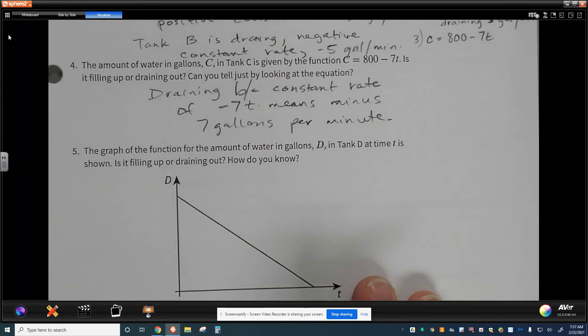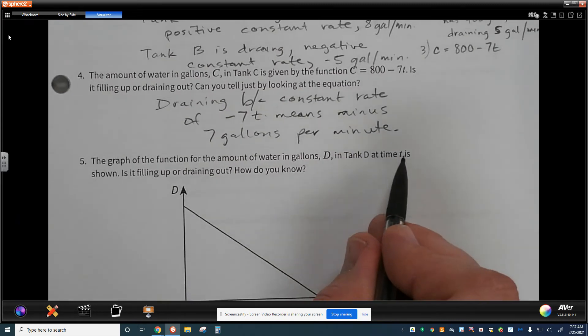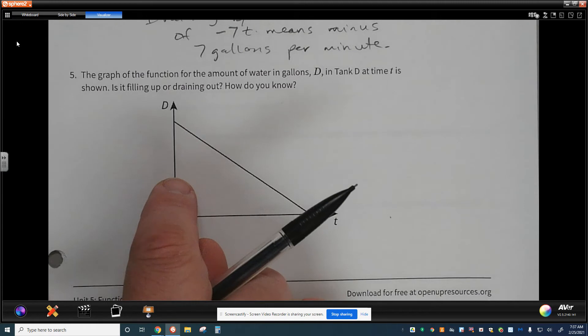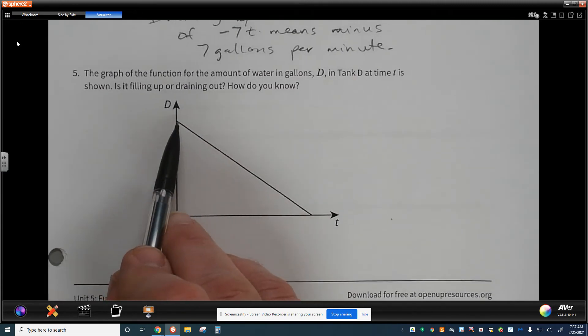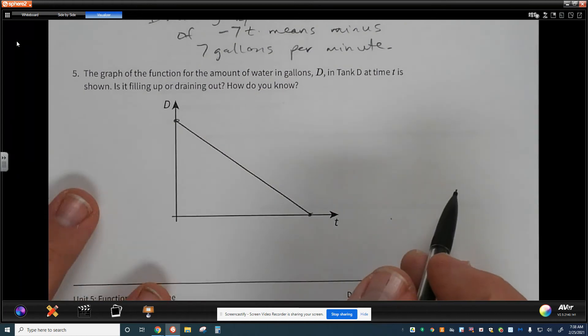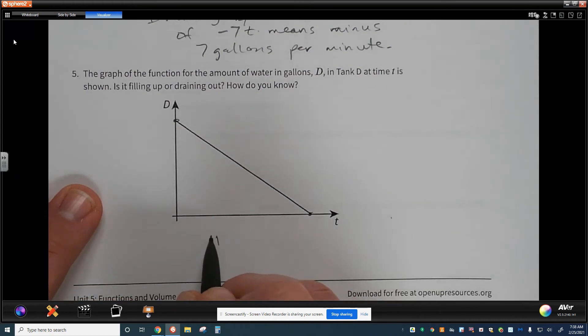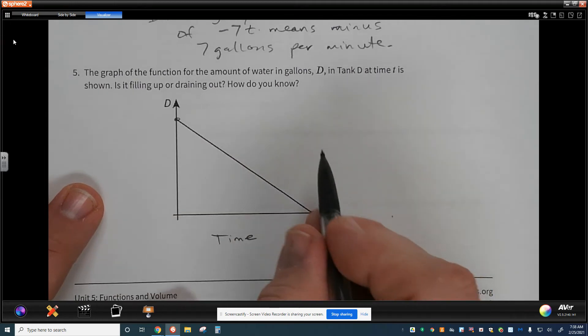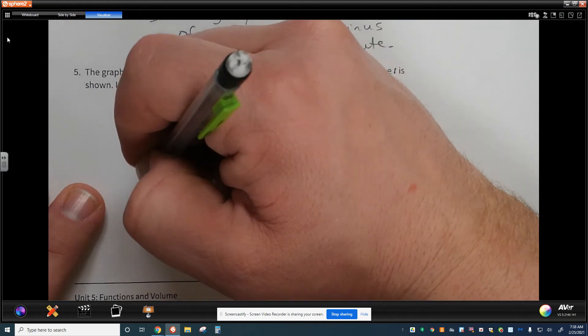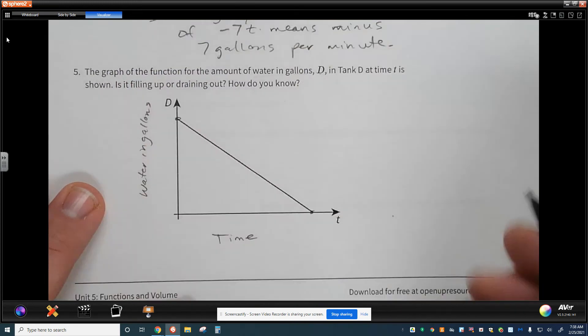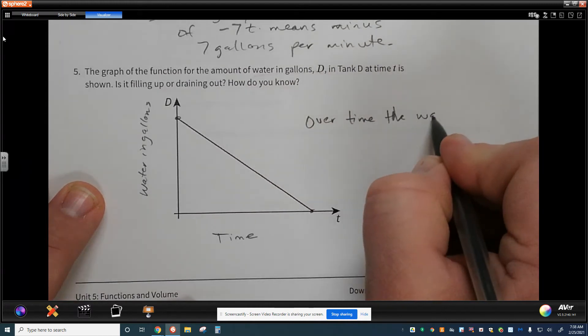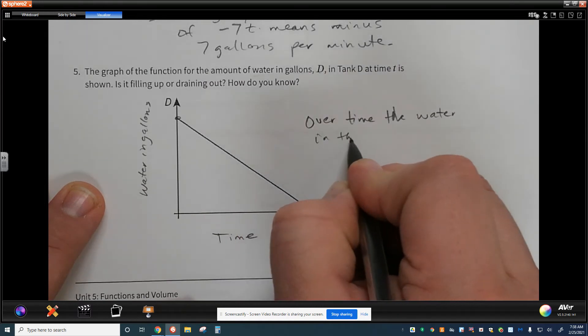So the graph of the function for the amount of water in gallons, D, in tank D, at time T is shown. Is it filling or draining out? Well, this one, they actually don't give us any specific information or specific data. But we do see that my graph is decreasing. It's starting from this line right here. And it's dropping all the way down to right here. Based on the information that I was given, this is any amount of time that would have been in minutes. And this one, D, is the water in the tank. And what I see is over time the water in the tank is decreasing.